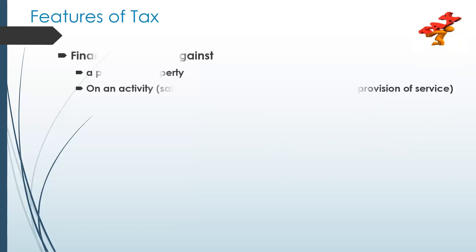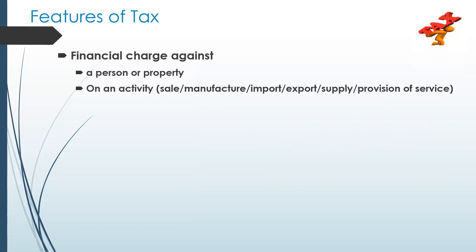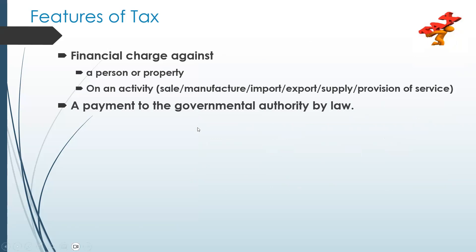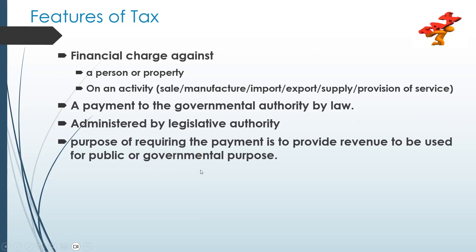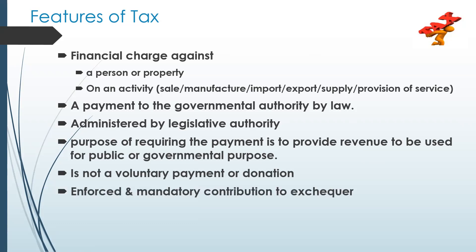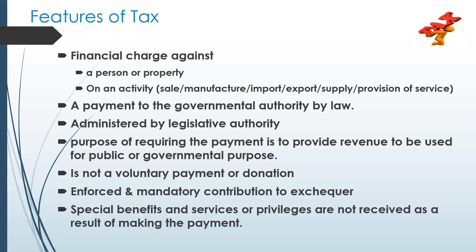Coming to the features of tax. The first feature: tax is a financial charge against a person or his property, or on an activity that includes sale, manufacture, import, export, supply, and provision of services. A tax is a payment to the government authority by law. The tax is administered by the legislative authority, and the purpose of requiring the payment is to provide revenues to be used for public or government purposes.